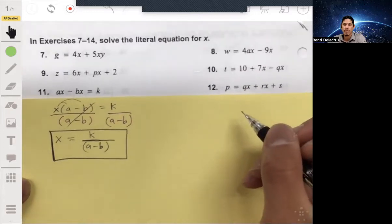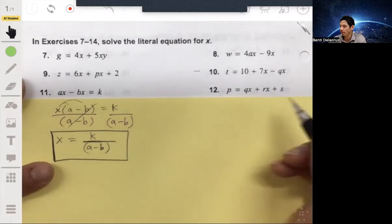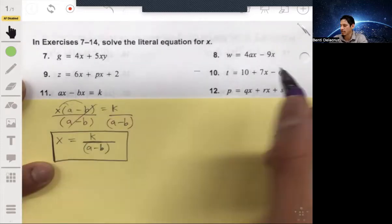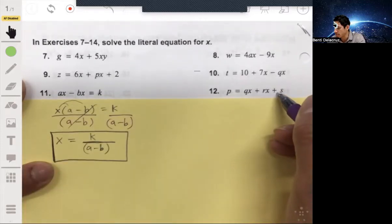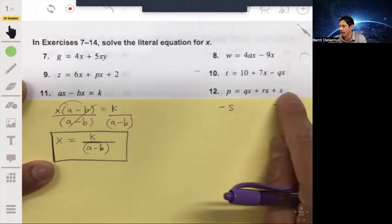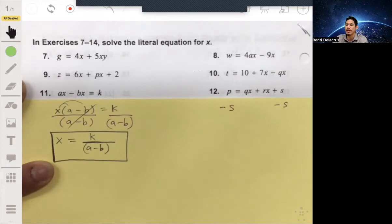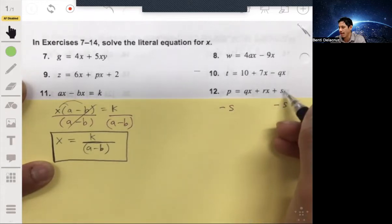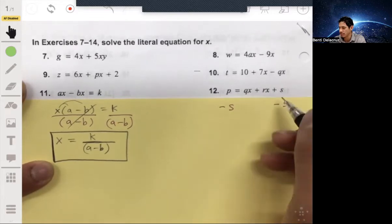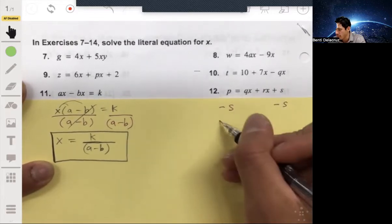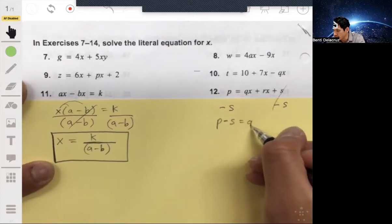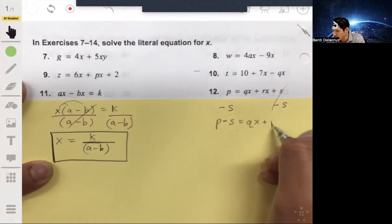Alright. Let's go through 12. Again, we're going to solve for X. Now, before we factor out an X, let's subtract S from both sides. Because, again, remember, think of the S as like if it's a number. Think of it as if it's like a 10. So if you're going to add 10 to both sides and you want to undo adding 10, you're going to subtract 10. So in this case, you're just taking away S. So what you're going to get is P minus S equals QX plus RX.